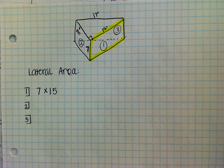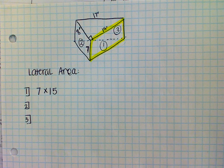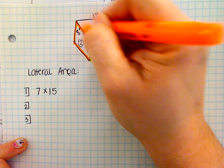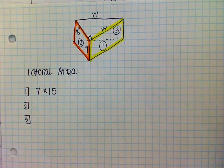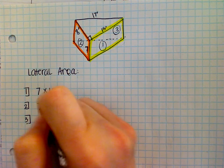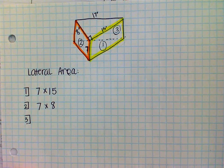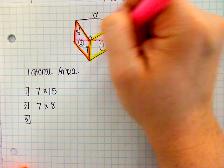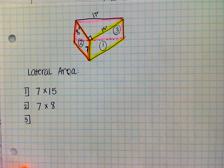How about face two? Who can tell me the dimensions of face two, please? Isaac? Seven by eight. Okay. And lastly, face three, Georgiana? Seven by seventeen. Seven by seventeen, all right.